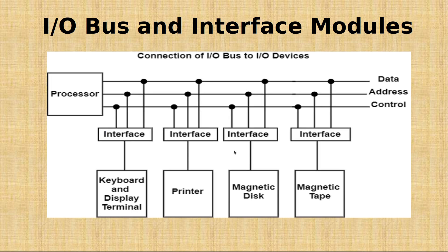Here is the circuit of the input-output interface. These are the peripheral devices — keyboard, printer, and other input-output devices — which want to communicate with the processor. There is one interface for each specific device. There are three different types of lines in the input-output buses: the data line, address line, and control line.